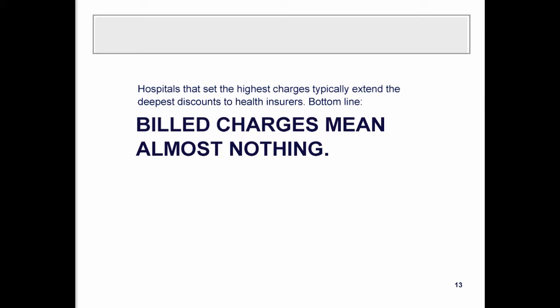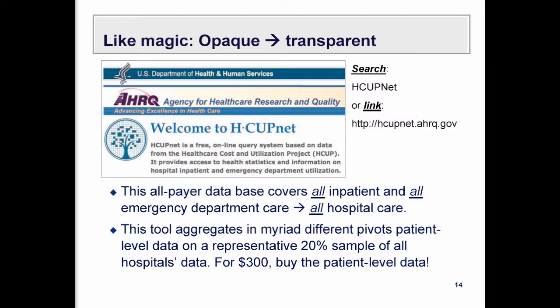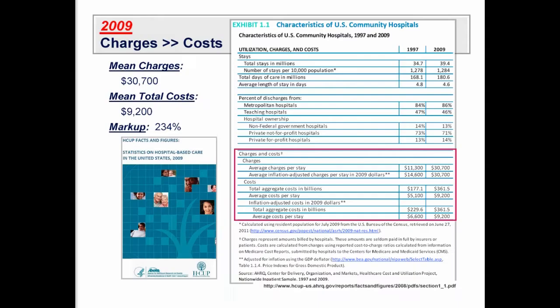I want to direct your attention to an absolutely fabulous website called HCUPnet. Some of you may have heard of the National Inpatient Sample. This is a query tool that allows you to look at that sample and get aggregate statistics. It's an all-payer database covering all inpatient care, all emergency department care, and all hospital care. It aggregates patient-level data in myriad ways so you can get a sense of what things actually cost.